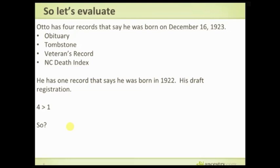One thing to notice about all the records saying he was born in 1923: they're all related to his death. He died when he was 75, and he was the youngest of about eight children. There was probably no one around who was there at his birth. Anyone who reported that information was providing secondary information — they weren't there at his birth.